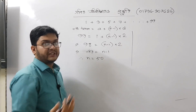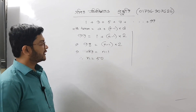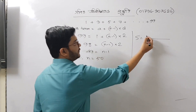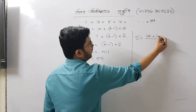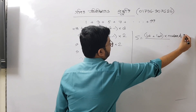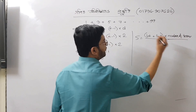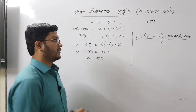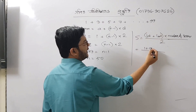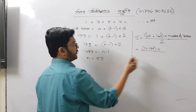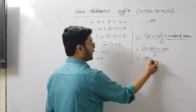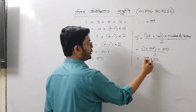Second part: sum of series. We will write S is equal to first term plus last term, into number of terms, divided by 2. So S is equal to 1 plus 99 into 50 divided by 2. S is equal to 100 into 50 divided by 2.